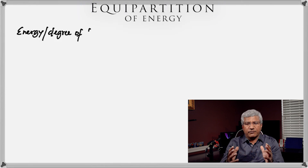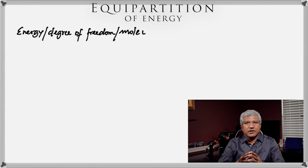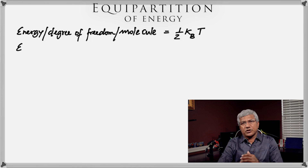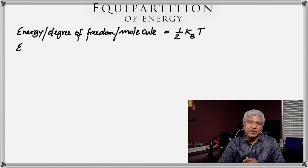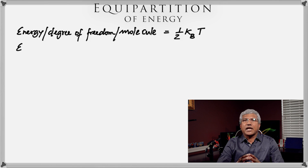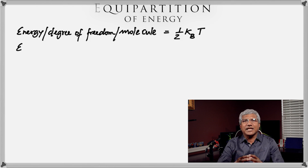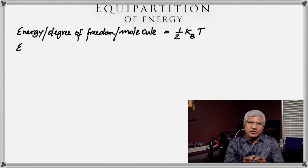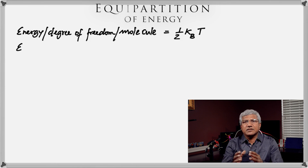Next, let's look at the law of equipartition of energy. This is a law by Boltzmann, and according to this law the energy for each degree of freedom for each molecule is ½kBT — the energy of one molecule per degree of freedom is ½kBT, where kB is Boltzmann's constant and T is the temperature in Kelvin. Boltzmann's constant is 1.38 × 10⁻²³ joule per Kelvin.